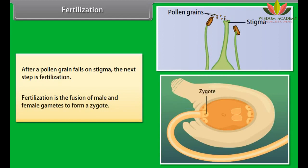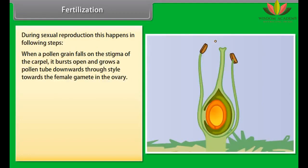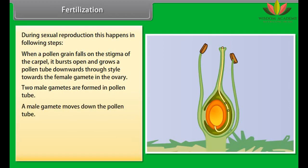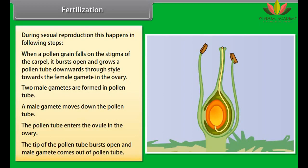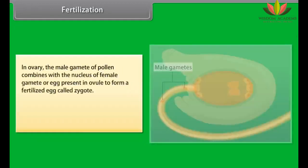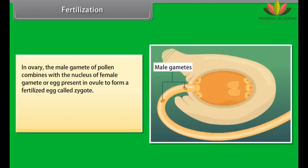Pollination: A new seed of the plant is formed when the male gamete present in a pollen grain unites with the female gamete present in the ovule. Pollination is the transfer of pollen grains from the anther of a stamen to the stigma of a carpel. Pollen grains are transferred by many agents such as insects, birds, wind, and water. Pollination is of two types: self-pollination and cross-pollination. Self-pollination occurs when pollen grains from the anther of a flower are transferred to the stigma of the same flower or another flower of the same plant.